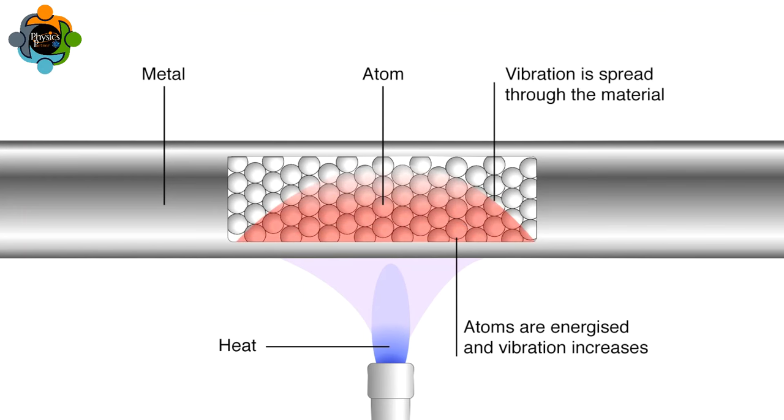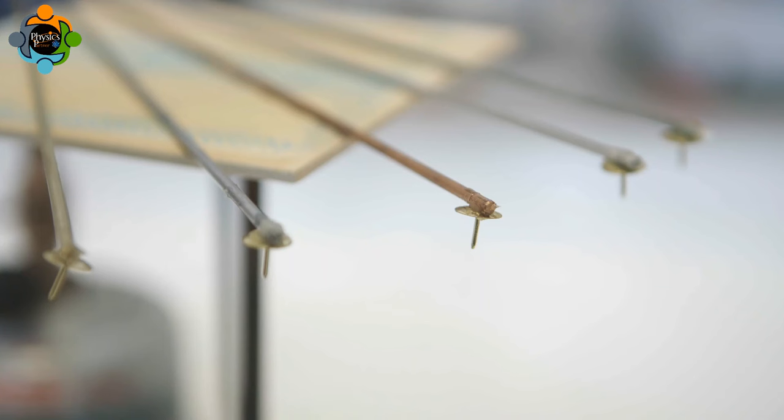Gradually along the rod, the drawing pins and petroleum jelly on the end of each metal rod are observed closely. The petroleum jelly begins to melt as the thermal energy heats the end of the rod.